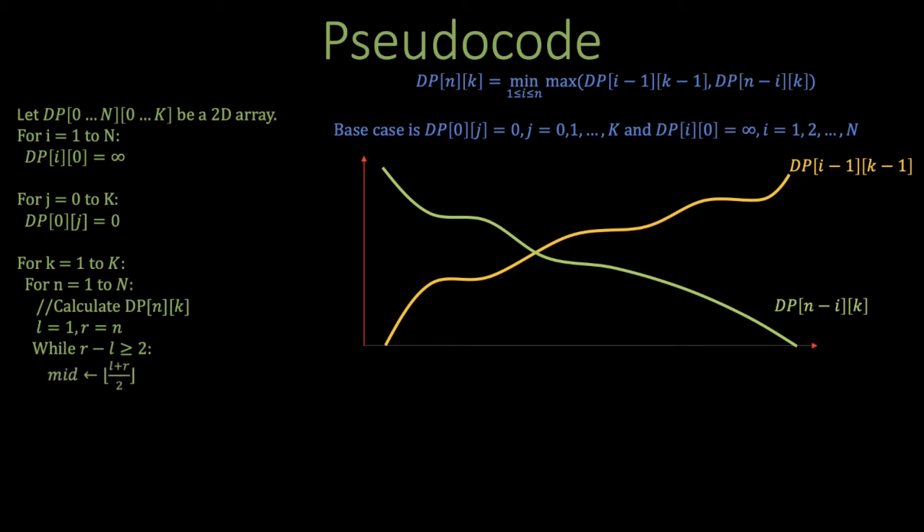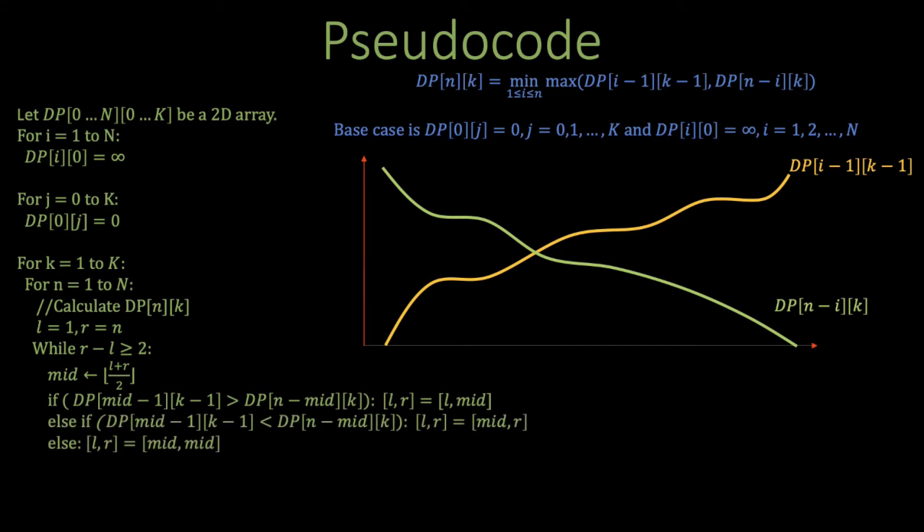Inside the binary search, we calculate the mid, then check if the yellow curve is above the green curve at mid, then update the interval to [l, mid] if the yellow curve is below the green curve, and update it to [mid, r] otherwise. Otherwise, the yellow curve and green curves must be equal, and so we set the interval to l equals r equal to mid.